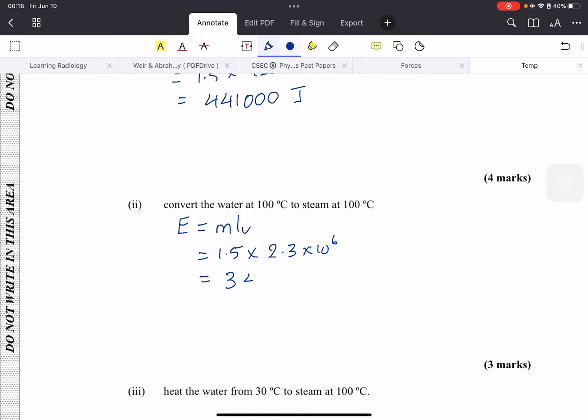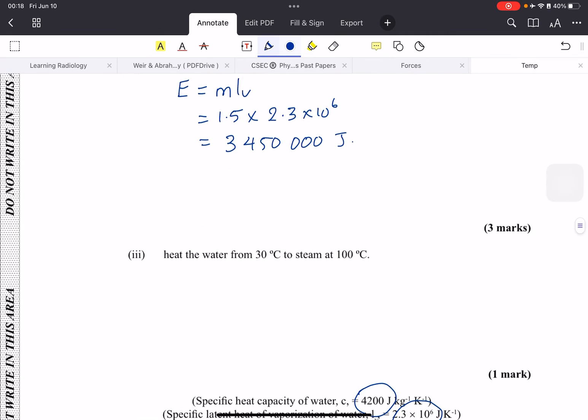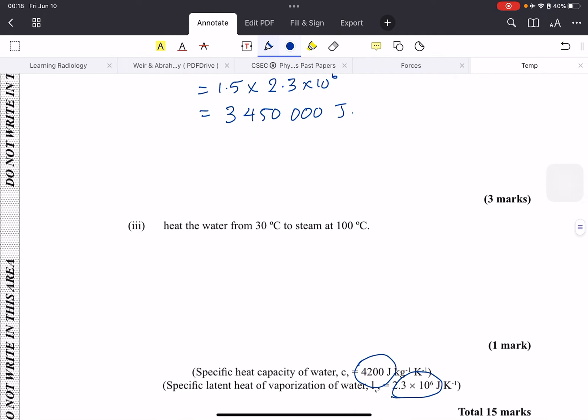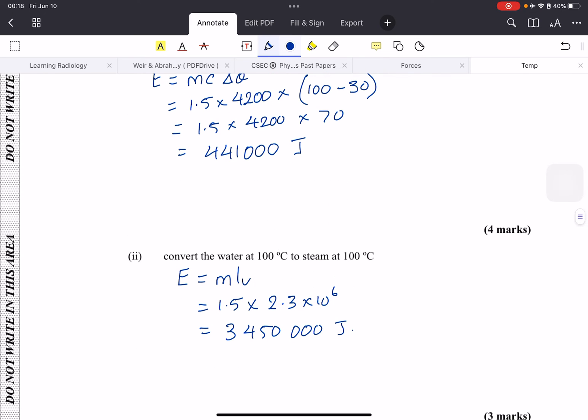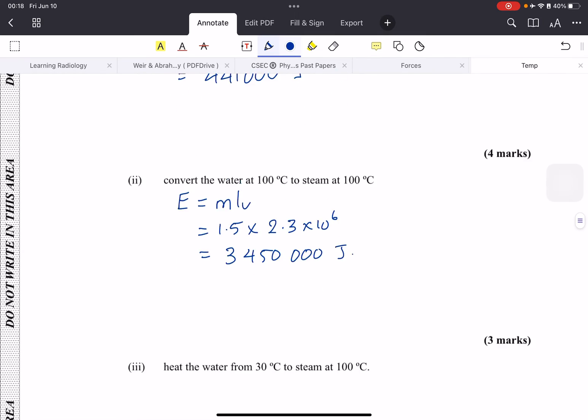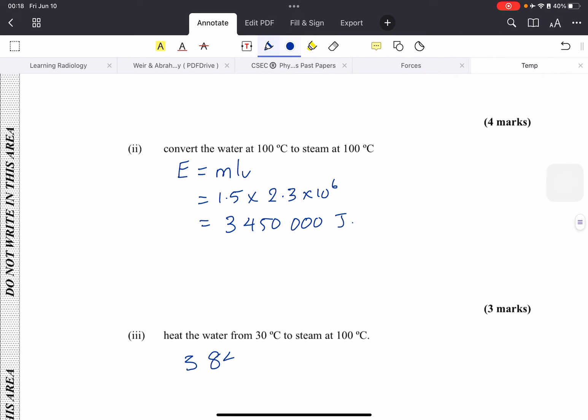We get 3 million 450,000 joules. Now they are asking for the total energy to heat the water from 30 and convert it to steam. So essentially, just want us to add it together. Adding it together, we add 441,000 to that, and my final answer is 3 million 891,000 joules.